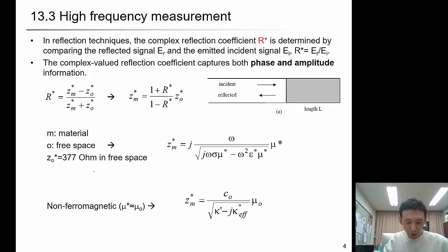In reflection techniques, the complex reflection coefficient R* is determined by comparing the reflected signal Er and emitted incident signal EI. So R* = Er/EI. When we use the complex reflection coefficient, it captures both the phase and amplitude information. The impedance of this material, Zm*, can be expressed as a function of the reflection coefficient and Z0*. Z0* is given as 377 ohm in free space.